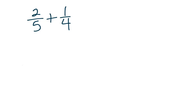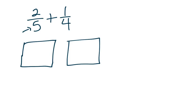So if you follow the steps in your interactive notebook, I'm going to draw two rectangles. I'm going to partition the first one into fifths vertically. So one, two, three, four, five.